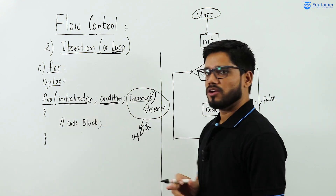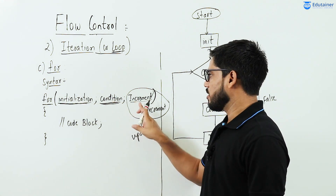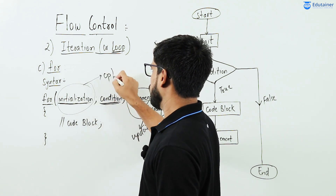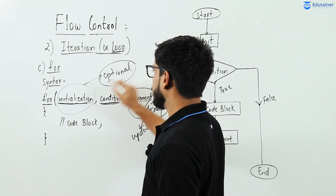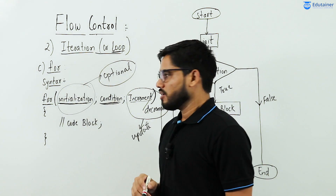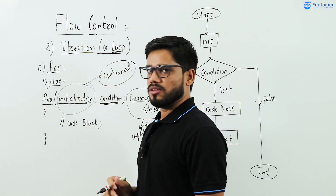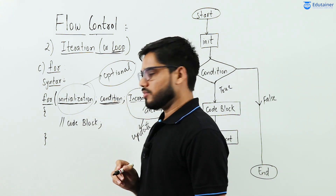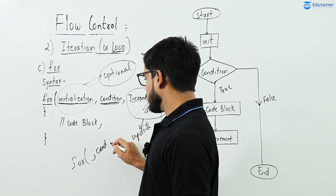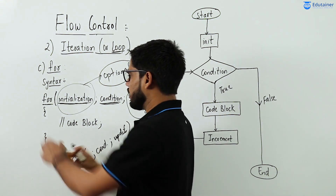So three parameters come inside the bracket with the for keyword: first is initialization where variable is declared and value is provided, second is the condition part, third is the updation part with increment or decrement. The initialization part is optional — it can be declared and initialized above the for loop. If you skip initialization, simply use a semicolon: for( ; condition ; increment/decrement ).